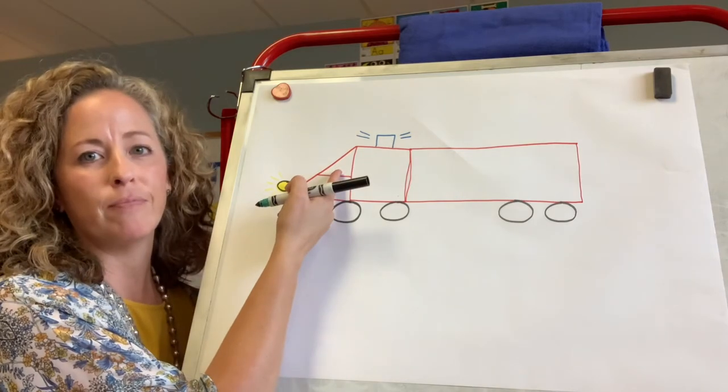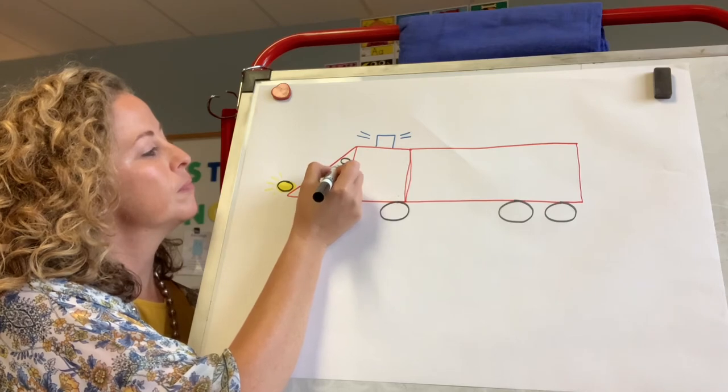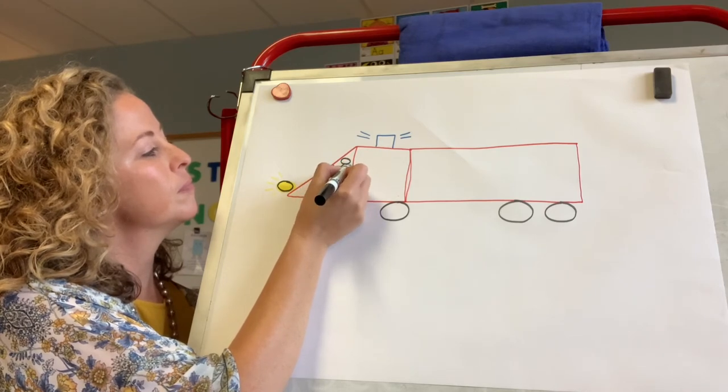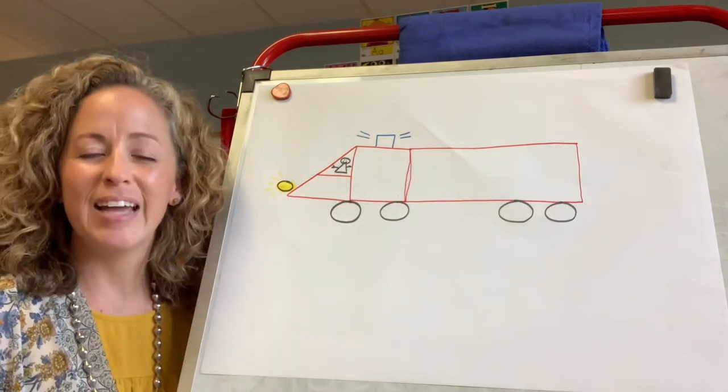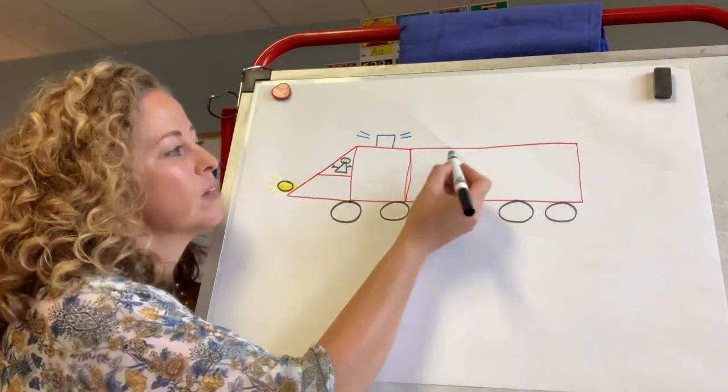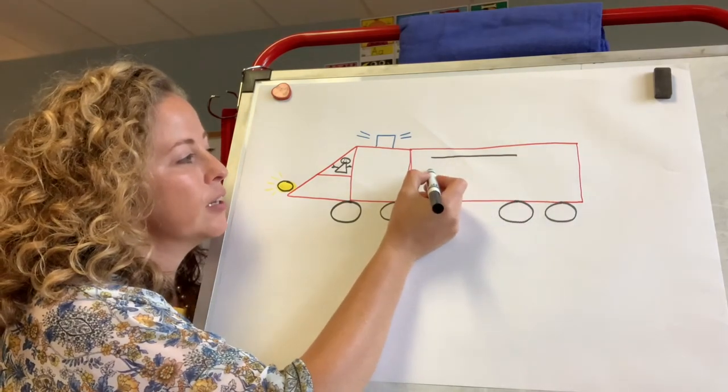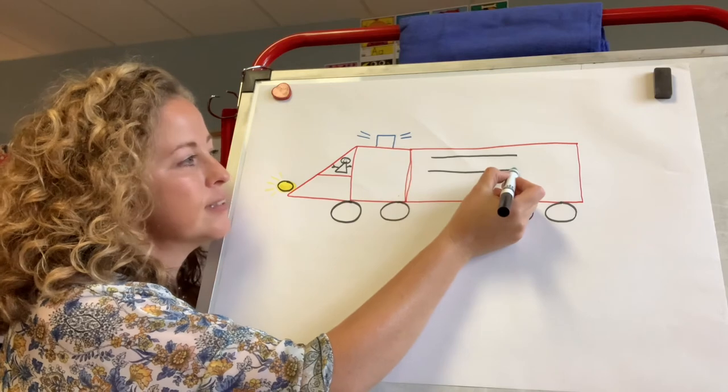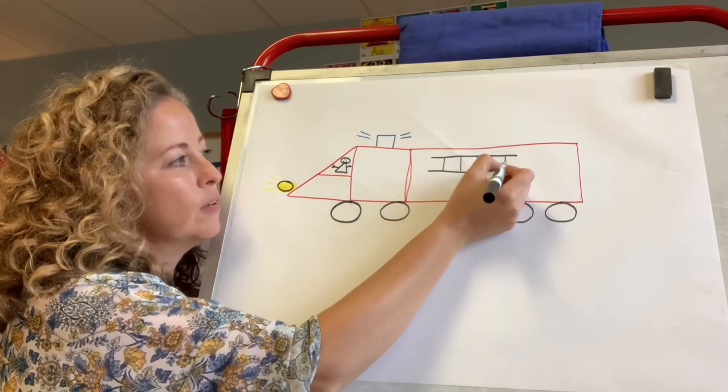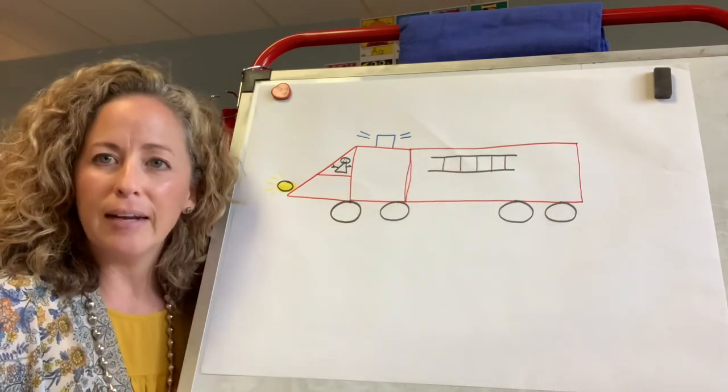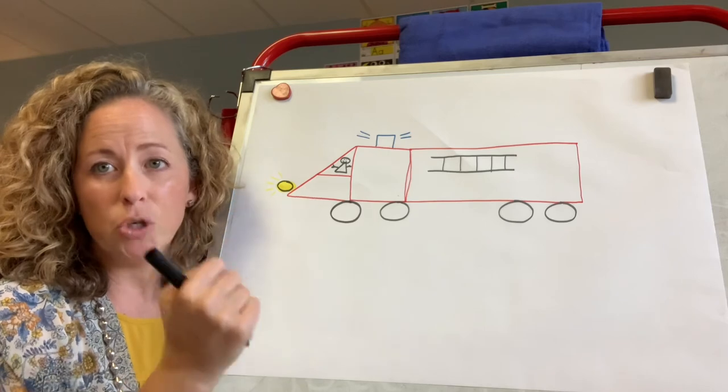Next I'm going to add a fireman. Next I'm going to make a long line across, and another long line across, and now short sticks all the way down. Look, I made a ladder.